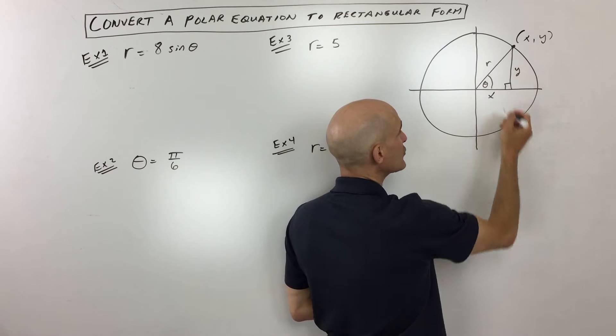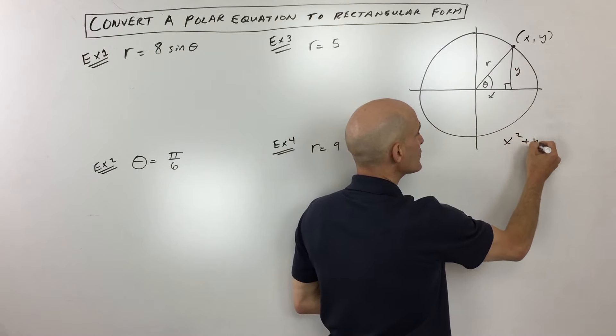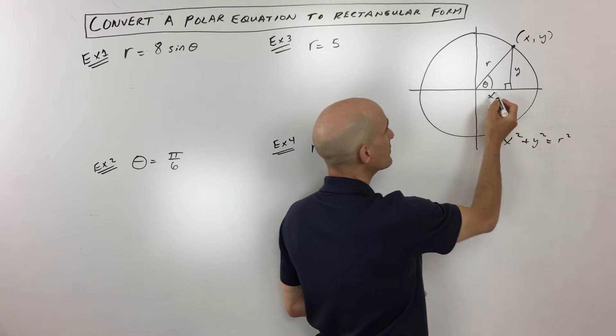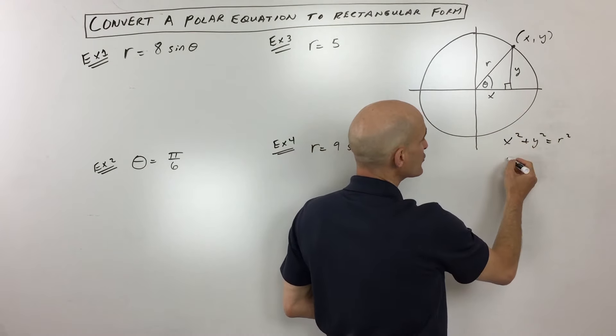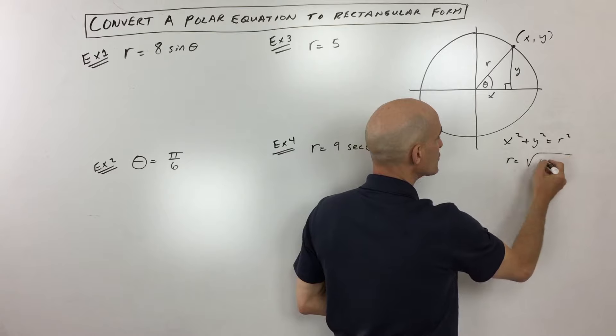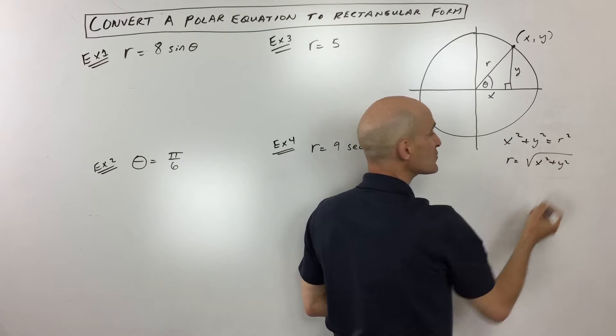But the connection between these variables is that x squared plus y squared is equal to r squared from the Pythagorean theorem. And if you take the square root of both sides, you can see that r equals the square root of x squared plus y squared.